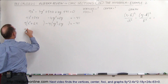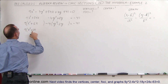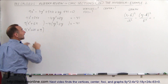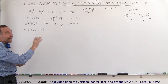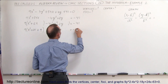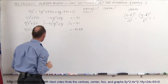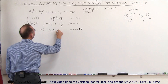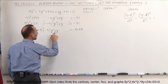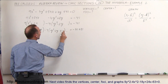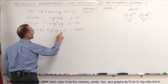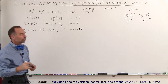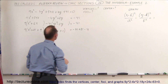To complete the square on x: take half of 6, which is 3, square it to get 9, and add it inside the parentheses. But since it's multiplied by 9, we actually added 81 to the left side, so we add 81 to the right side, making it minus 41 plus 81. For y: take half of minus 2, which is minus 1, square it to get plus 1, and add it inside. Since it's multiplied by minus 4, we subtracted 4 from the left side, so we subtract 4 from the right side.